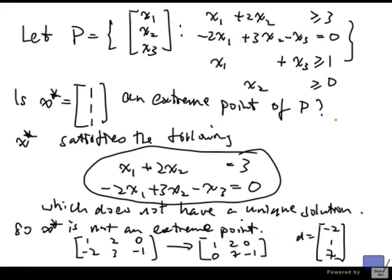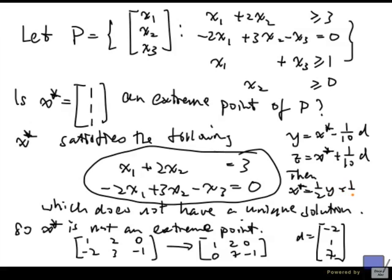And now if I look at the point y equals x star minus say 1 over 10 d, and z equals x star plus 1 over 10 d, well then x star is equal to 1 half y plus 1 half z.